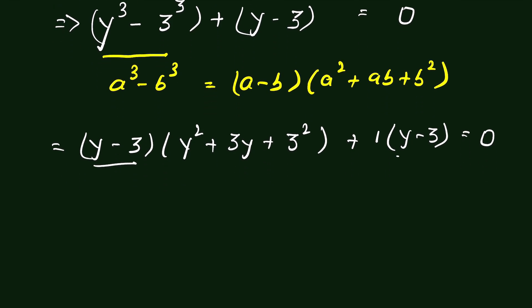Now you can see y minus 3 and y minus 3 is the common factor. So we can take y minus 3 as common and write y minus 3, then parenthesis y square plus 3y, 3 square is 9 and then plus 1 is equal to 0.